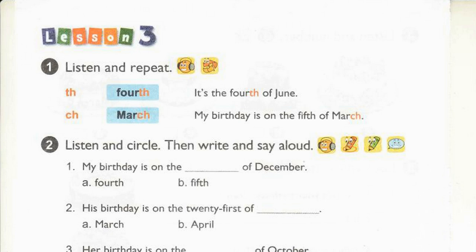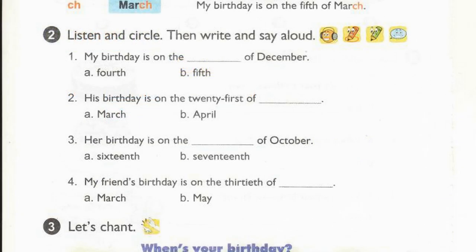Page 28, Lesson 3, Activity 1. Listen and repeat. Fourth — it's the 4th of June. March — my birthday is on the 5th of March. Page 28, Activity 2. Listen and circle, then write and say aloud. 1. My birthday is on the 5th of December. 2. His birthday is on the 21st of March. 3. Her birthday is on the 16th of October. 4. My friend's birthday is on the 30th of March.